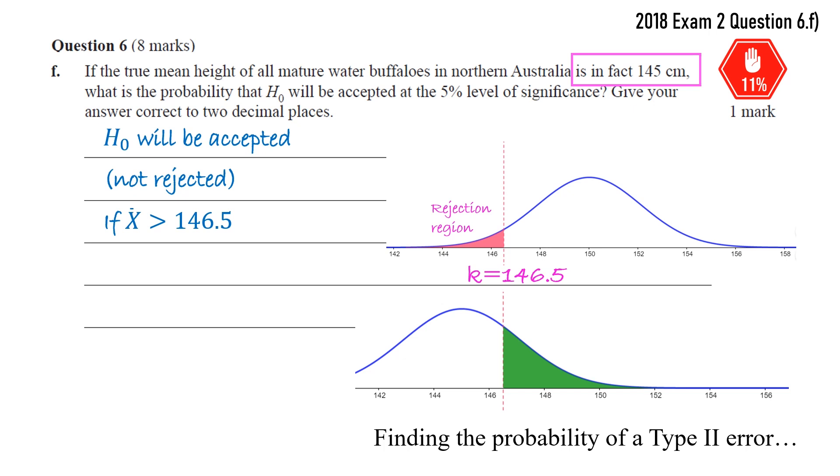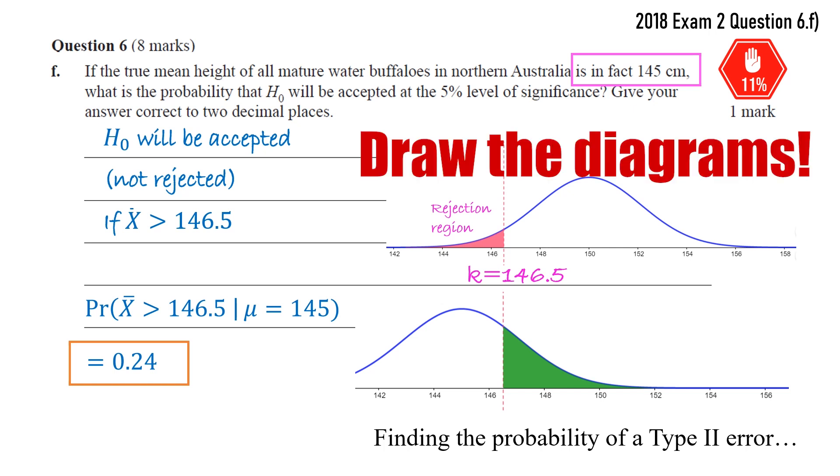Now, in order to not reject, we'll need to be in that green region on the right of that K value. So all we need to do is find the probability on the second normal distribution that we're in that green region that is greater than 146.5. So once we understand it, it's just another normal CDF. We can calculate that on our calculator, it's 0.24. But I think the diagrams are really useful there to actually understand the situation that we're using a new normal distribution curve, and which region we're looking for on that curve. So I definitely recommend for these types of questions, you actually draw the diagrams during your exam.